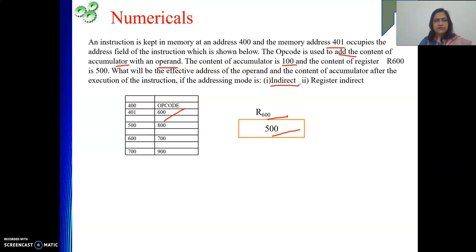Indirect means it is memory indirect. This address field value represents the address of the EA, not EA. At 600, we will get some address. That address is your effective address. At this address, we are going to get your data. This is the address of the data. What they are asking us? Effective address. Effective address will be 700.